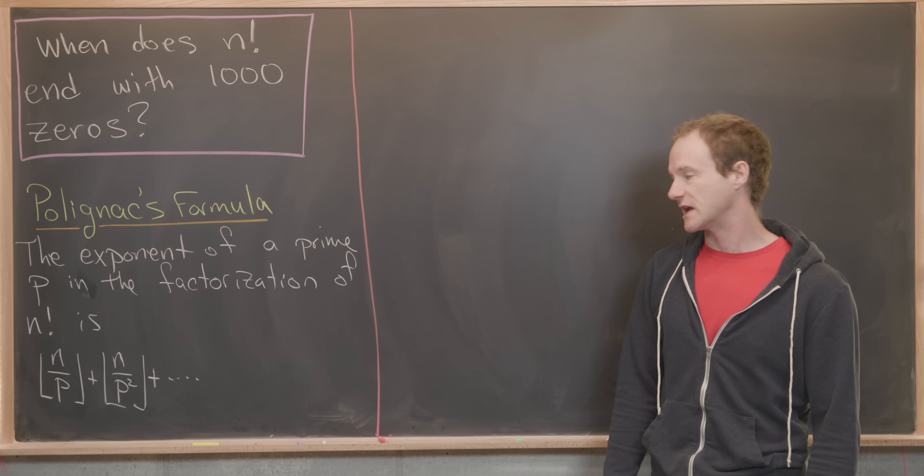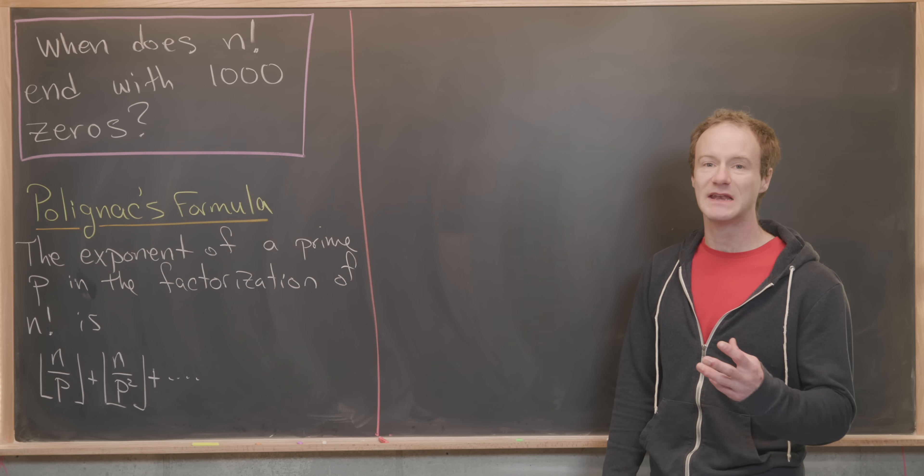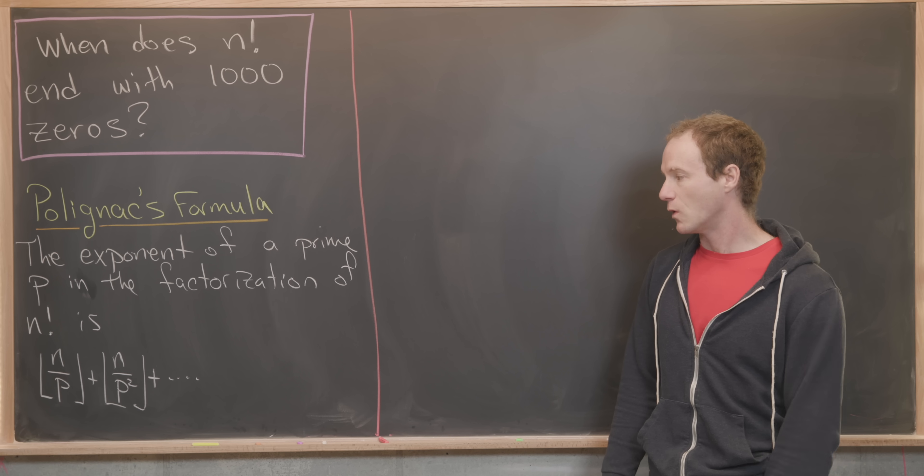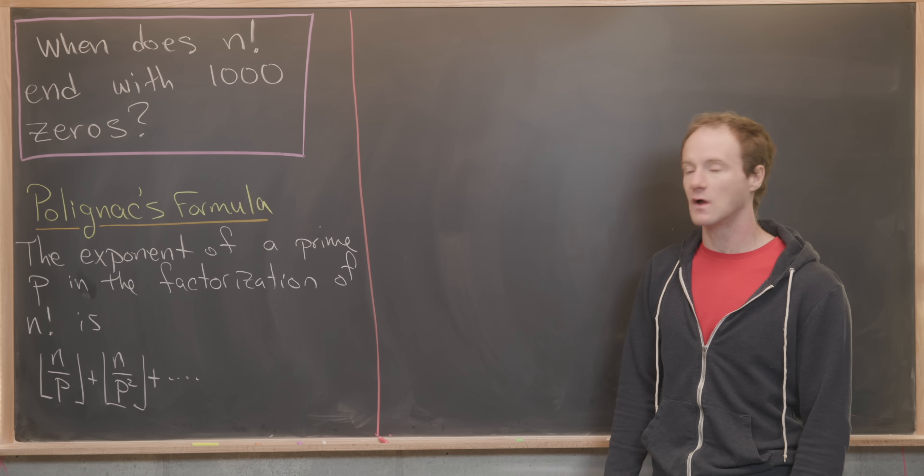Why I say it looks like an infinite sum is depending on the size of n, this will eventually truncate. Notice at some point, a power of p will be larger than n, and thus n over that power of p will be less than 1, so the floor will be equal to 0.